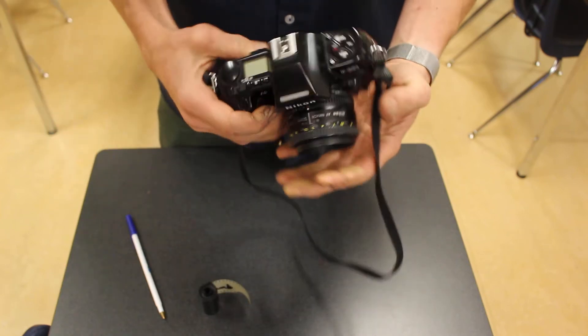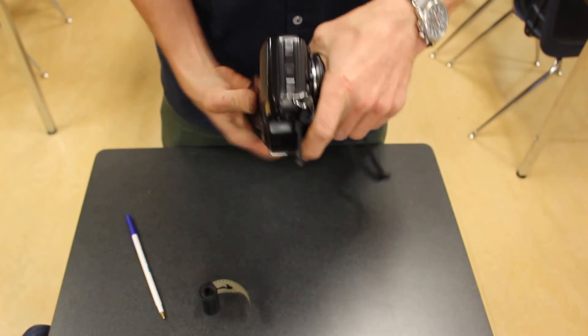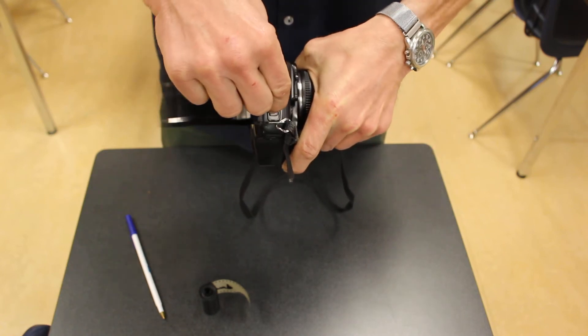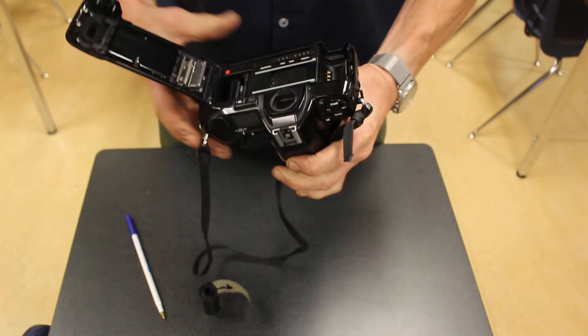Next, you're going to open the camera. You can open the camera back by squeezing these two levers together on the end there. That will open the back of the camera.